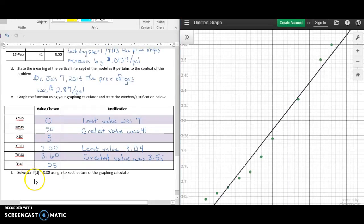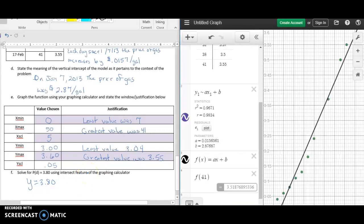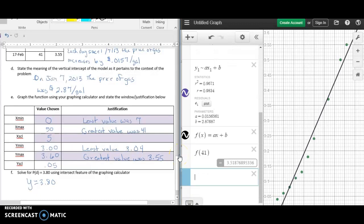Now we want to solve this last question: P of D equals 3.80. That means we are going to have to create another function and say Y equals $3.80 because we want to find out where that intersection is. I'm going to add another line down at the bottom, and I'm just going to type in Y equals $3.80.